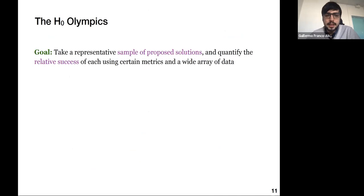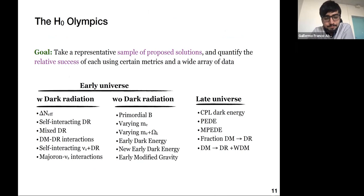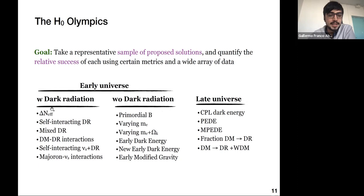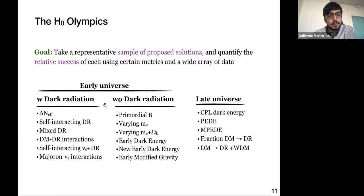In order to get a fair ranking of proposed models, we have taken a sample of solutions from the literature and quantified their relative success by confronting all of them against the same array of data using certain metrics. In total we took 18 different models split into three categories. On one hand we have early universe models, including models involving dark radiation or extra relativistic degrees of freedom (delta N_eff), and more complicated models adding interactions with dark matter, self-interacting neutrinos, or neutrinos interacting with a scalar particle called the Majoron.